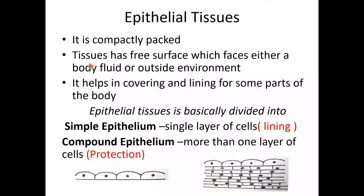Epithelial tissue is found on the inner side of body cavities. The entire outside of the animal's body — for example, skin — is made by epithelial tissue. Skin is also called epithelial tissue. It includes covering and lining for certain parts of the body. The epithelium tissue is basically divided into two types: Simple epithelium, which is a single layer of cells, and Compound epithelium, which is more than one layer of cells.